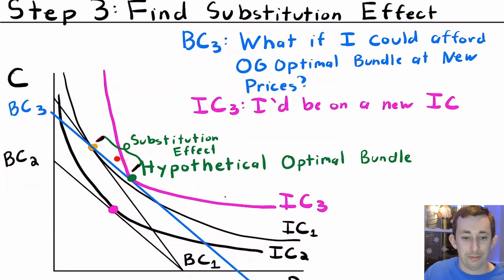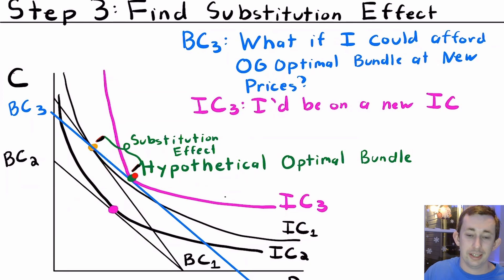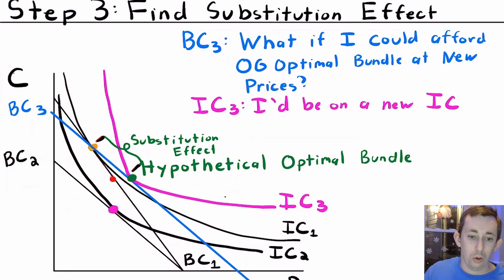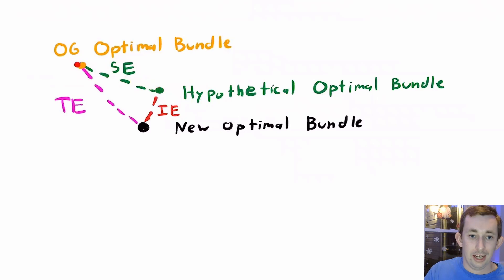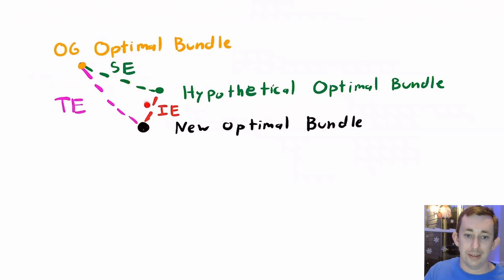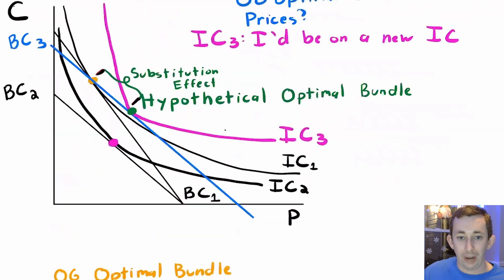We also know that the total effect is just the substitution effect plus the income effect. So if orange to green is the substitution effect, it must be the case that green to pink is the income effect, because orange to pink is the total effect. If we get rid of the lines, we can see it more clearly: orange to green is the substitution effect, orange to pink is the total effect, and the difference — the income effect — is green to pink.